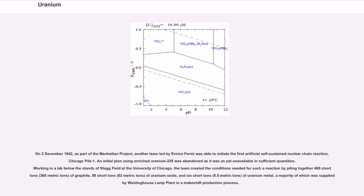On December 2, 1942, as part of the Manhattan Project, another team led by Enrico Fermi was able to initiate the first artificial self-sustained nuclear chain reaction, Chicago Pile-1. An initial plan using enriched uranium-235 was abandoned as it was as yet unavailable in sufficient quantities. Working in a lab below the stands of Stagg Field at the University of Chicago, the team created the conditions needed for such a reaction by piling together 400 short tons (360 metric tons) of graphite, 58 short tons (53 metric tons) of uranium oxide, and 6 short tons (5.5 metric tons) of uranium metal, a majority of which was supplied by Westinghouse Lamp Company in a makeshift production process.